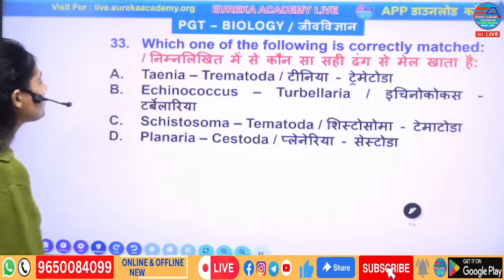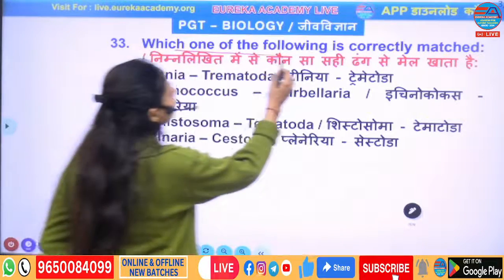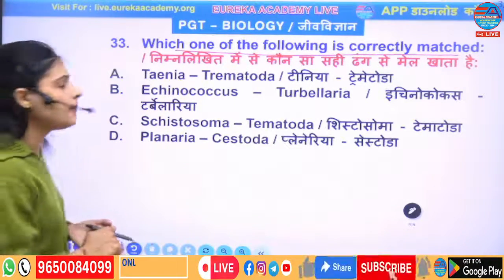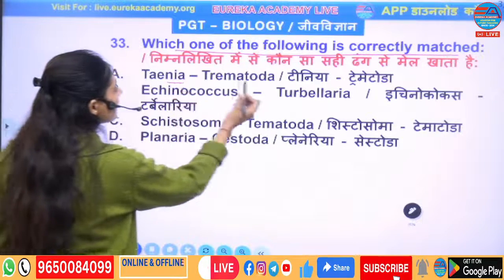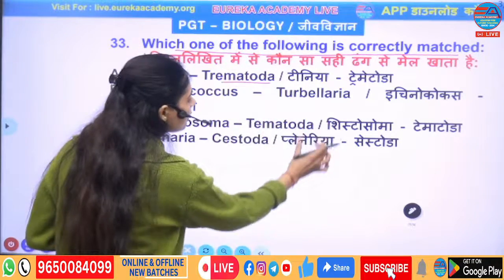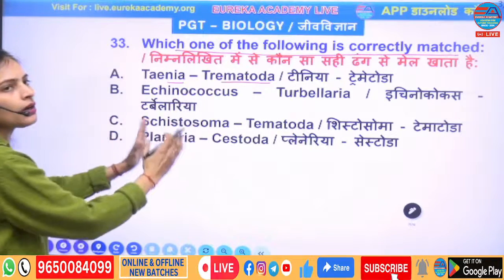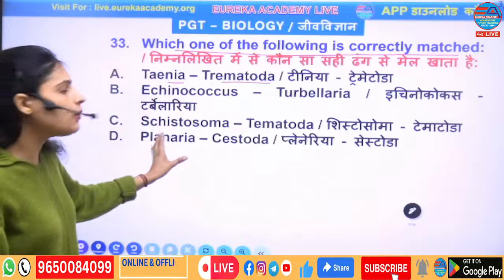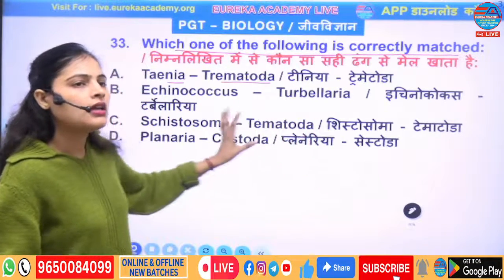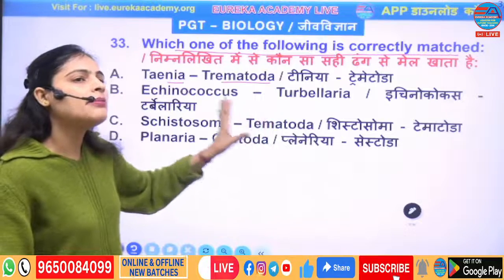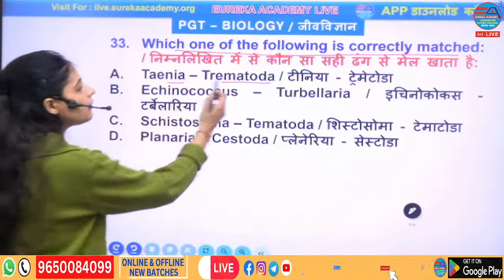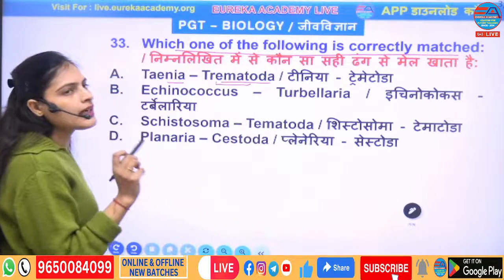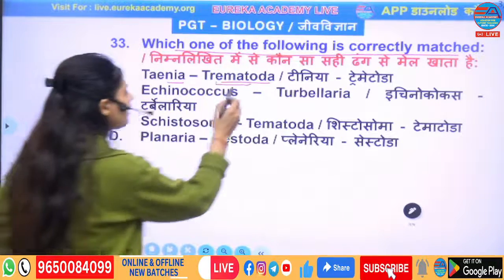Next question: which one of the following is correctly matched? The classes of Platyhelminthes are given along with genus names. Taenia comes under Trematoda — is that correct? No. Taenia comes under Class 3, Cestoda. So that option is wrong.